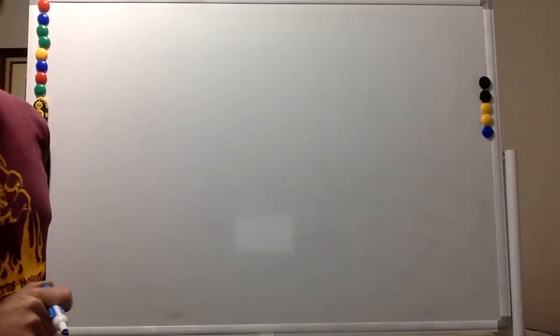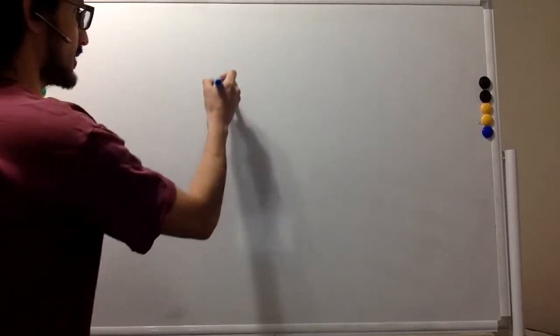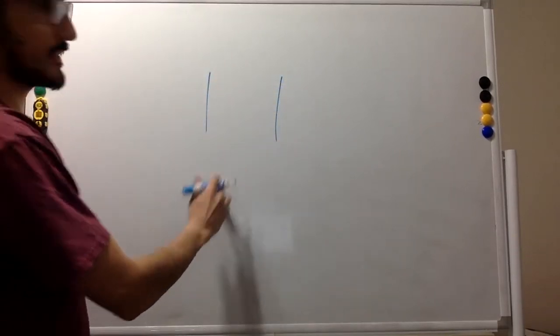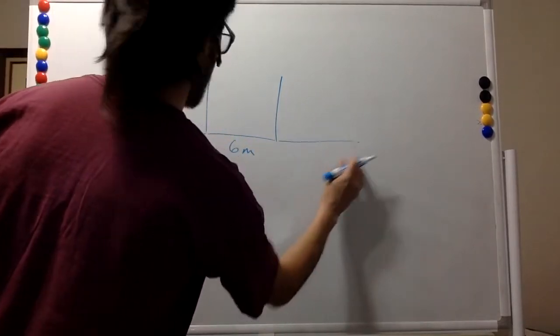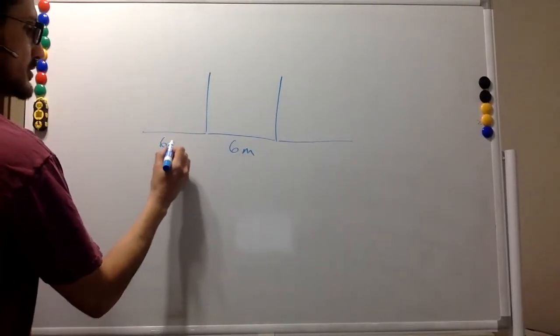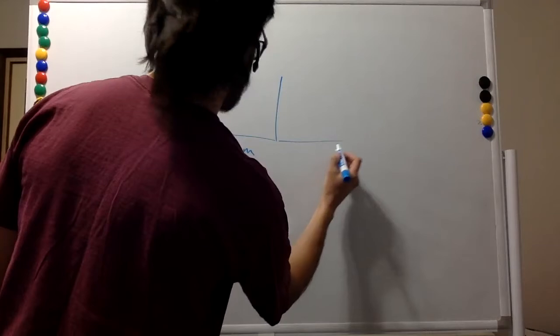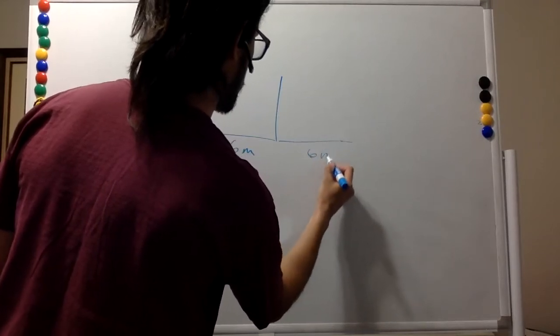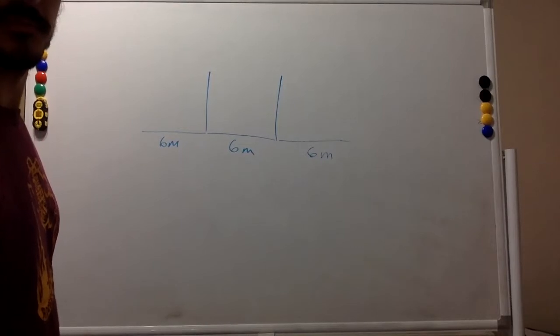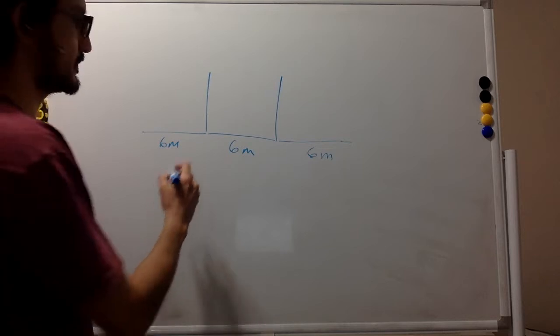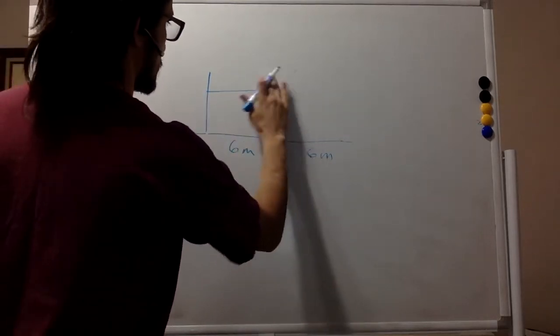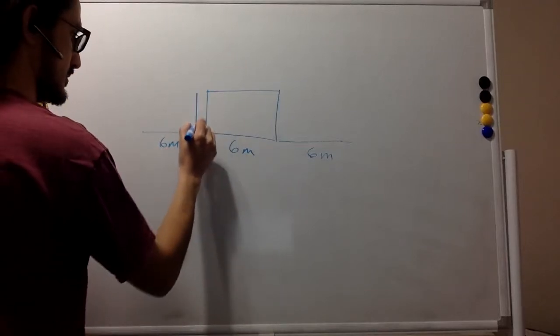Hello. So in this problem, we have the following situation of a house. The width of the house is 6 meters, there's another 6 meters over here, another 6 meters over here. This height over here is 3 meters.